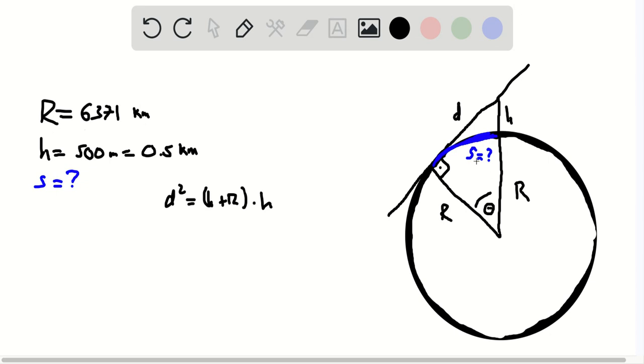So how do we find this distance along the ground? Well, if you know this angle theta, and it's given to you in radians, then you can just say that s is equal to r times theta. This is just a normal arc length formula for a circle.